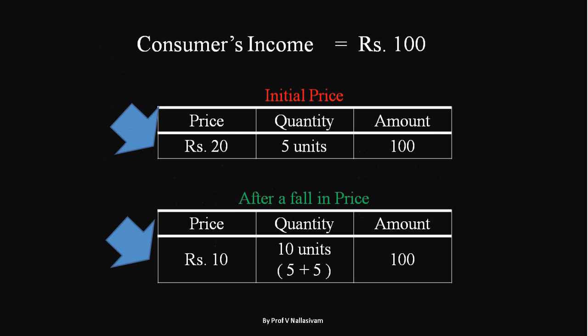Thus the increase in the real income of the consumer makes the consumer buy more of the commodity after a fall in the price of the commodity. This is how income effect becomes one of the reasons for the demand curve to slope downwards.